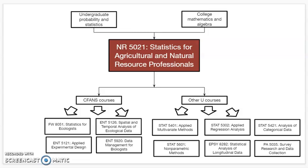There's really no prerequisite for this course. Likely you've probably had some quantitative classes in the past as an undergraduate, maybe a statistics class. If you take this course, it will set you up well for other courses in statistics across the university. Many of those courses might be offered within CFANS, the College of Food, Agriculture and Natural Resource Sciences.